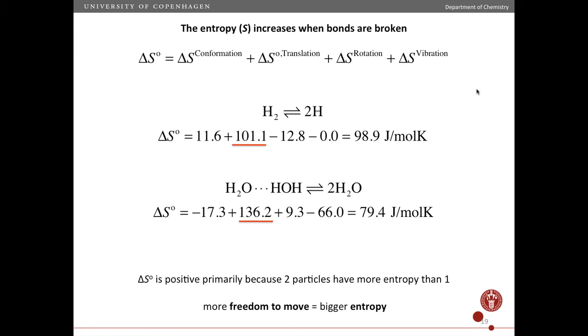When bonds are broken, the dominant term is usually the translational term. But the net effect is the same. The entropy increases when bonds are broken. And that's what we saw in the previous example. That is because there's usually more ways of making the state when the bonds are broken compared to the number of ways of making a state when the bonds are together, when the bonds are unbroken.